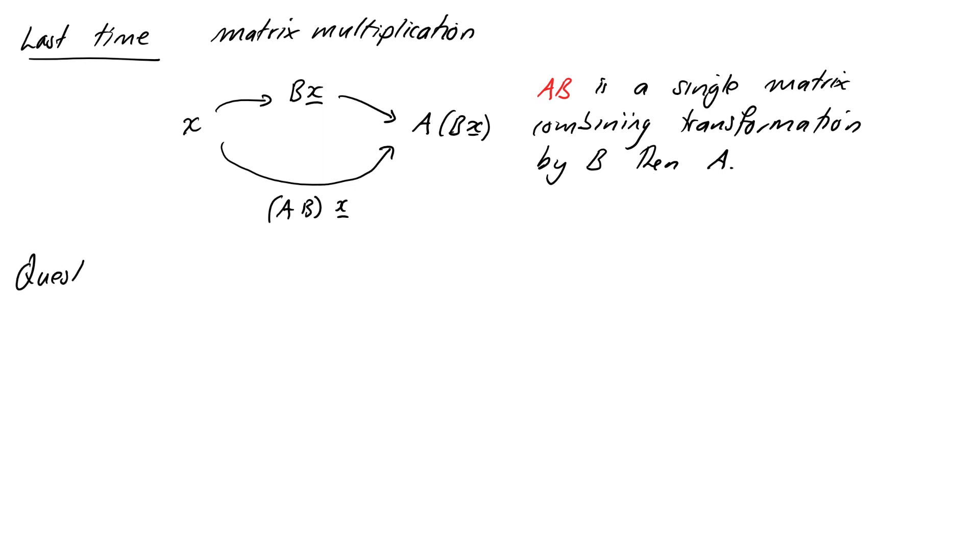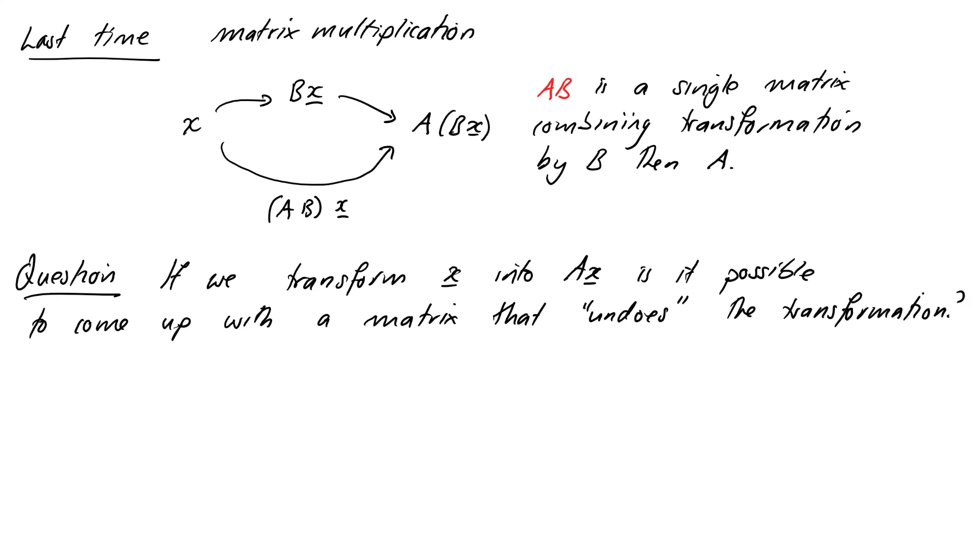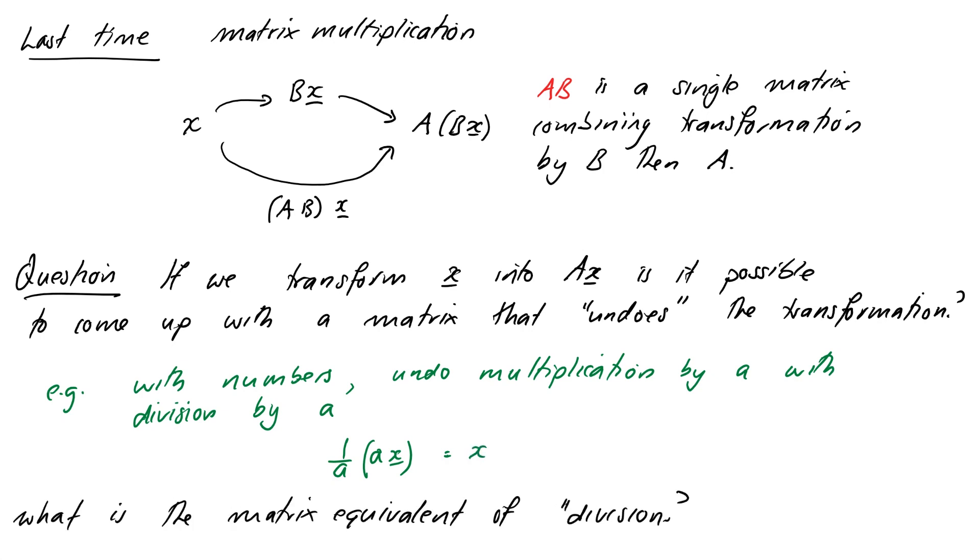So with that in mind one thing we'd quite like to know is if we transform a vector x into A times x, is it possible to come up with a transformation that kind of undoes that, that gets us back to x again. For example we know if we're working with numbers that if we multiply x by A then we can undo that by dividing by A afterwards. So we'd like to know if there's a matrix equivalent of division so to speak.